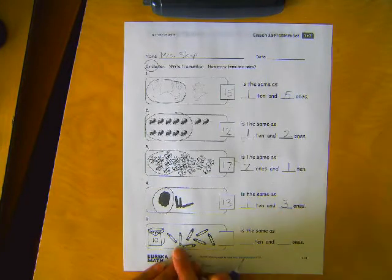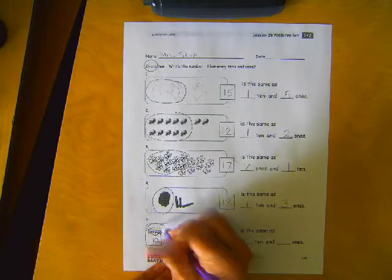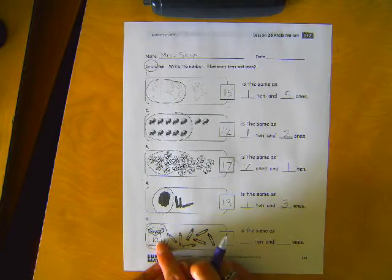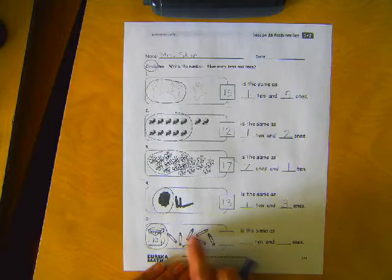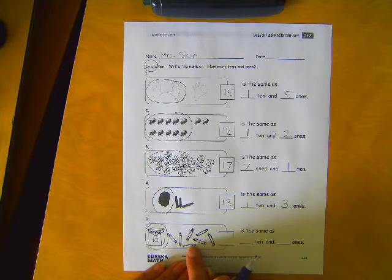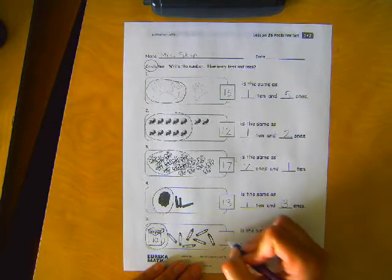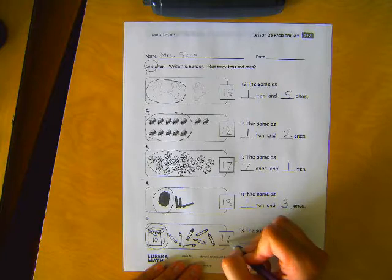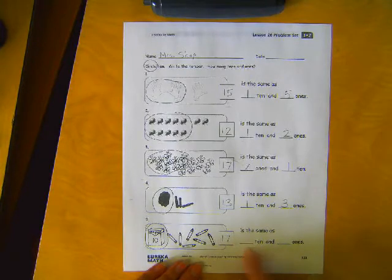Okay, here's crayons. Crayons has a group of ten in the box. So here's a group of ten crayons in the box. And then one, two, three, four, five, six, seven extra crayons laying out. Okay, so ten and seven more makes seventeen. Seventeen is the same as blank ten and blank ones. So go ahead and write your numbers in there.